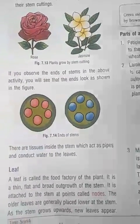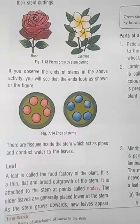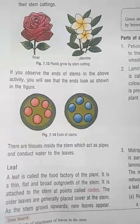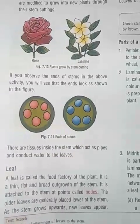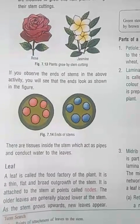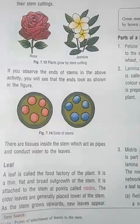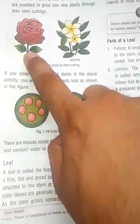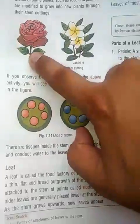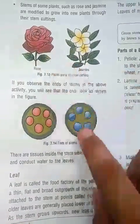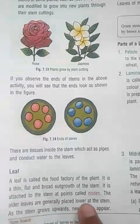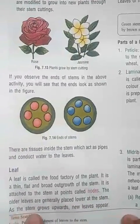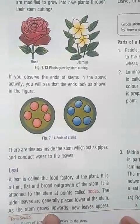The leaf is called the food factory of the plant. It is a thin, flat, and broad outgrowth of the stem. It is attached to the stem of the plant at a point called the node. When the plant's body is touched at a leaf attachment, this point is known as the node. Older leaves are generally placed lower on the stem as the stem grows upward.